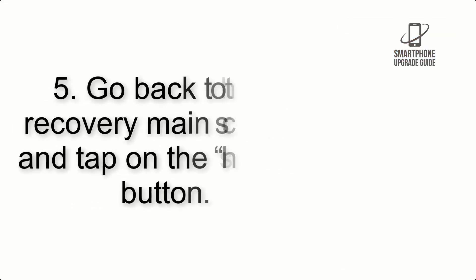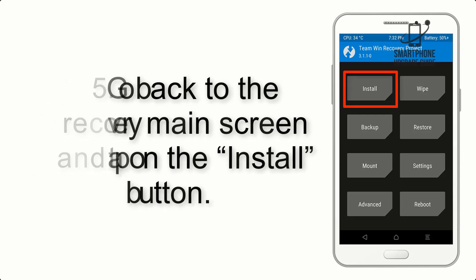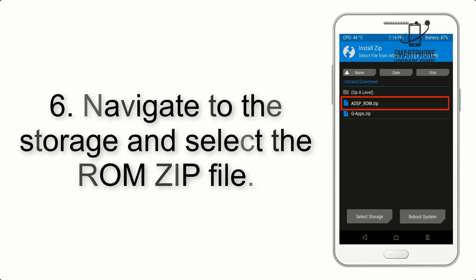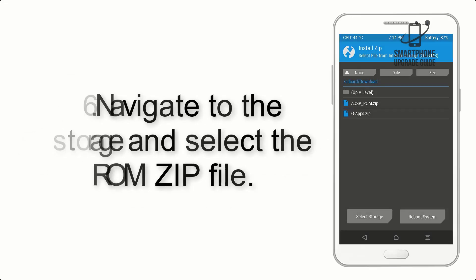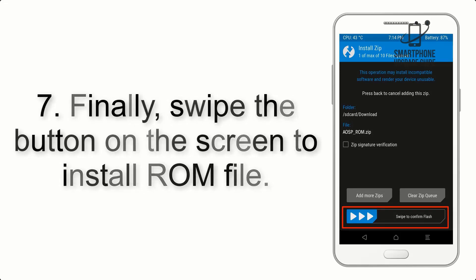Step 5: Go back to the recovery main screen and tap on the Install button. Step 6: Navigate to the storage and select the ROM zip file. Step 7: Finally, swipe the button on the screen to install the ROM file.